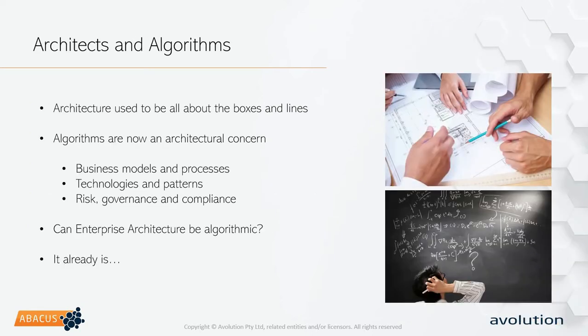In our context with architects, architecture used to be very much about just boxes and lines — drawing interface diagrams and things like that. But the market's moved on a lot since then. It's now focused much more about analytics and about algorithms, and that's a true architectural concern. Whether you're looking at measuring or scoring your business models and processes, harvesting patterns and technologies, or doing risk and compliance. So the open question is: can enterprise architecture be algorithmic? Well, it already is.